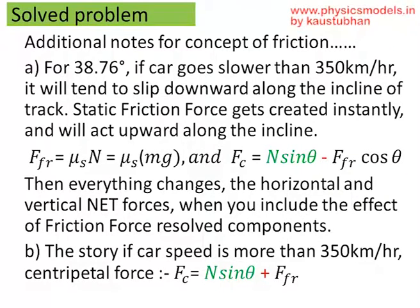Now, just for understanding, it has nothing to do with the answer to the question. If the car goes slower than 350 kilometers per hour for this fixed angle, we know that N sin theta is fixed by this 38.76. Then the car will tend to slip downwards as it goes around the track.